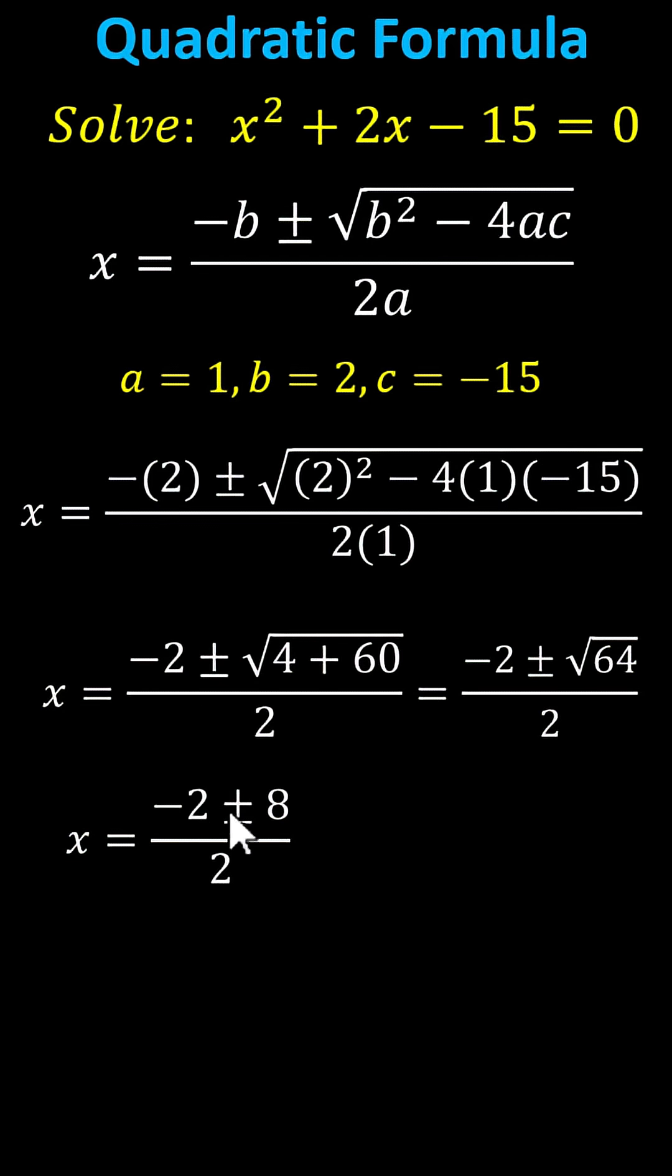First, we have x equals negative 2 plus 8, which is positive 6 divided by 2, as well as negative 2 minus 8, which is negative 10 divided by negative 2, giving us two solutions: x equals 3 or x equals negative 5.